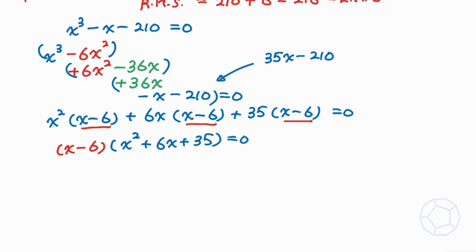So we have x minus 6, and then for the bracket we get x square plus 6x plus 35 is equal to zero. So the cubic equation is completely factorized. Therefore x is equal to 6 or x square plus 6x plus 35 is equal to zero.